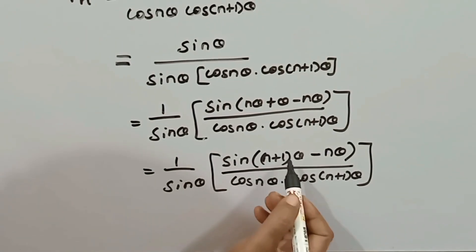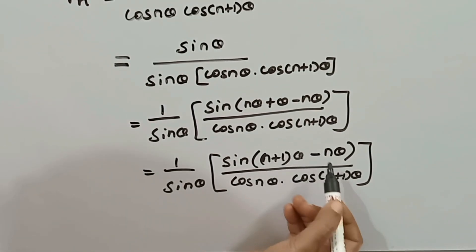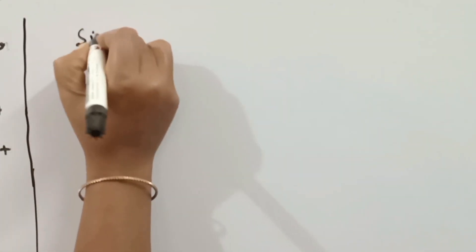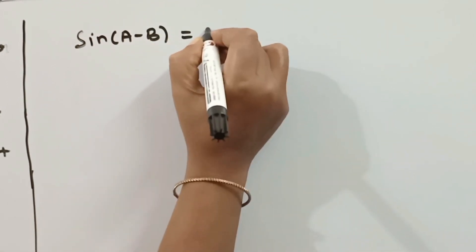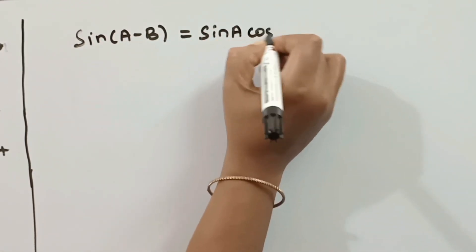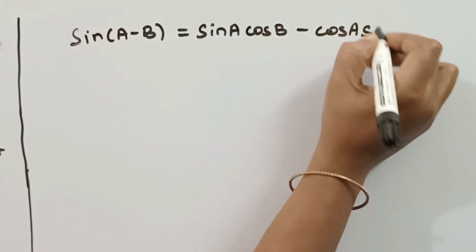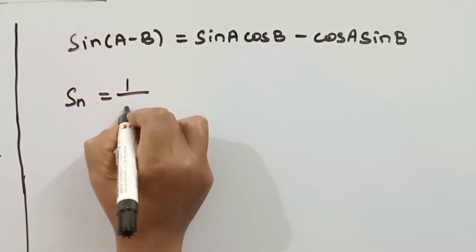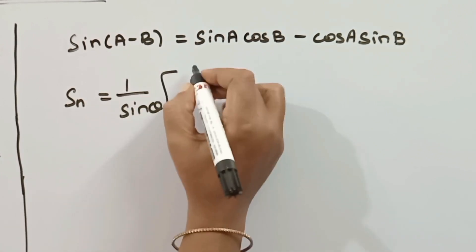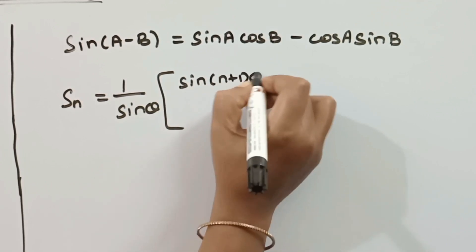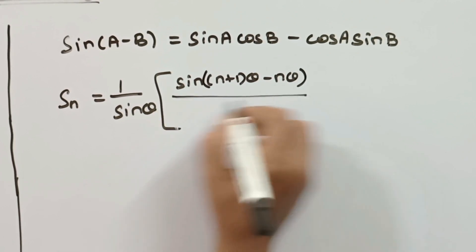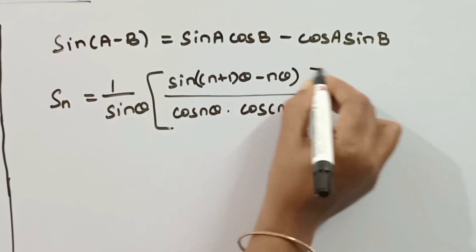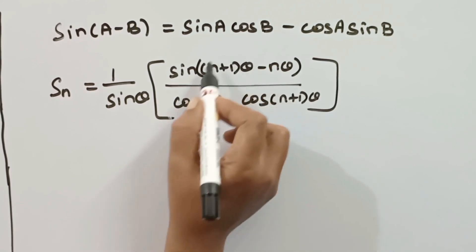In the next step, we apply the sin(a−b) formula. sin(a−b) = sin(a)cos(b) − cos(a)sin(b). We substitute: a = (n+1)θ and b = nθ, so the numerator becomes sin((n+1)θ − nθ) = sin(a)cos(b) − cos(a)sin(b), divided by cos(nθ)·cos((n+1)θ).